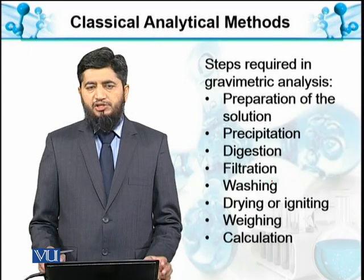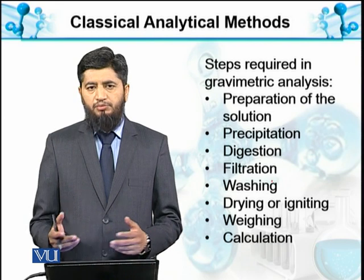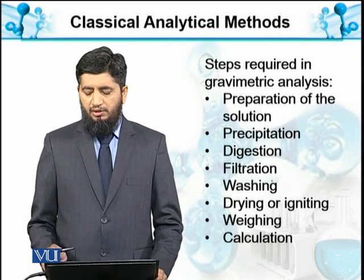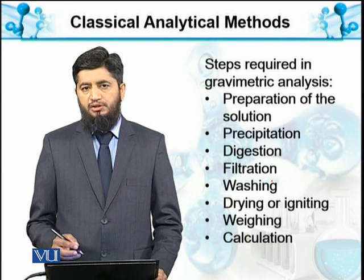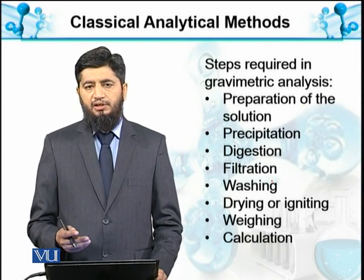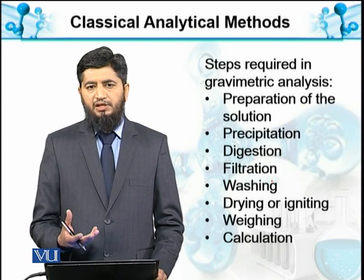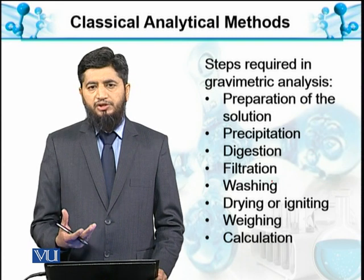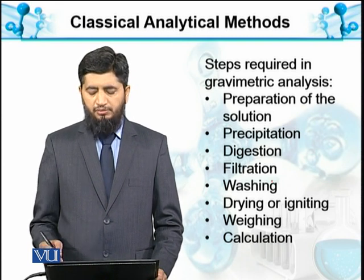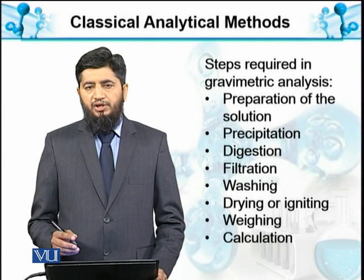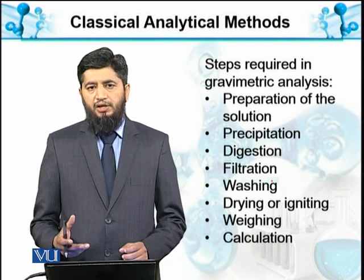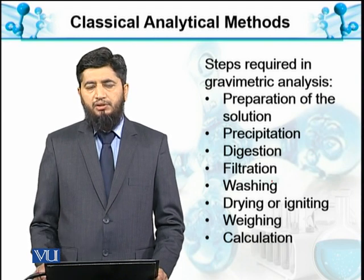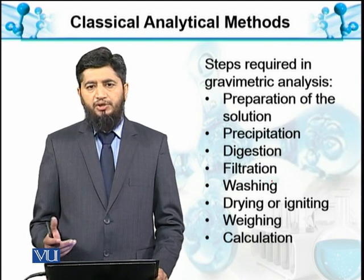اس discussion سے ہم سمجھ سکتے ہیں کہ وہ steps جو precipitative gravimetric analysis کے لئے استعمال ہوتے ہیں وہ یہ ہیں: preparation، heating — جس کے ذریعے chemical composition کو مخصوص بنایا جاتا ہے یا coagulation کی جاتی ہے — filtering، washing، ignition یا drying، اور اس کے بعد weighing اور calculation۔ یہ ہمارا precipitative gravimetric method ہے۔